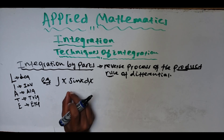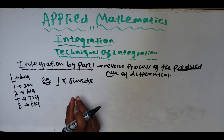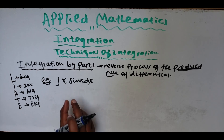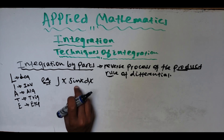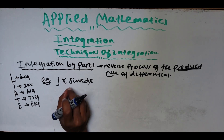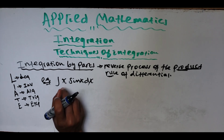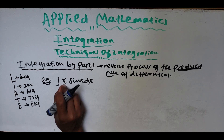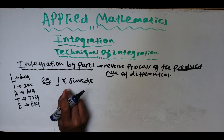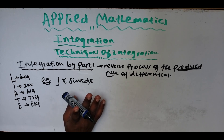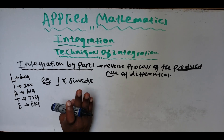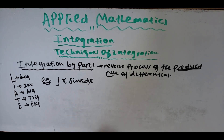For example, if we let u equal to sin(x), we cannot reduce it to the other term, and if we let u equal to x, we cannot get sin(x). So we need to use integration by parts.